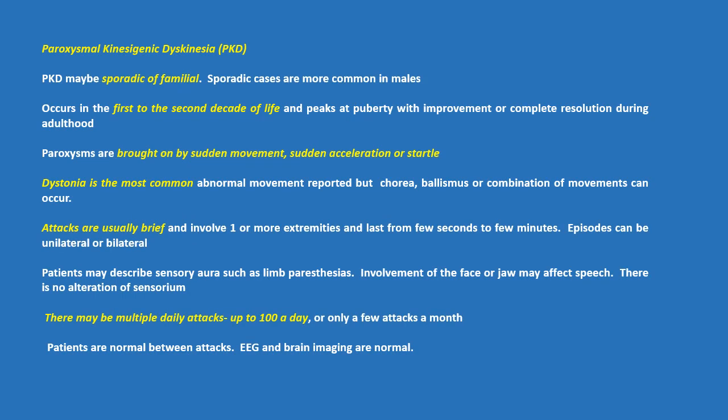PKD may be sporadic or familial. Sporadic cases are more common in males. It occurs in the first to second decade of life and peaks at puberty with improvement or complete resolution during adulthood. Paroxysms are brought on by sudden movement, sudden acceleration or startle.